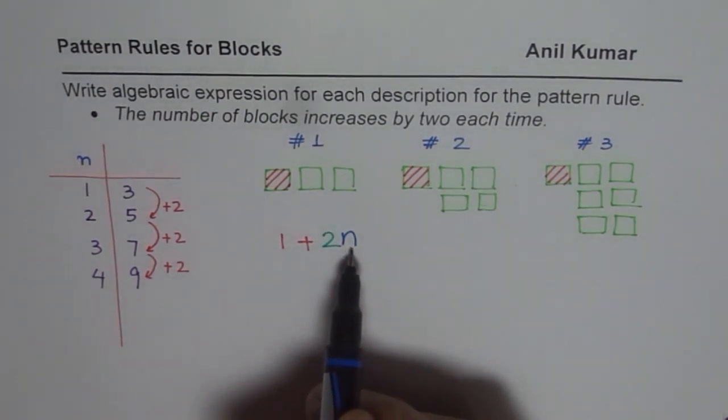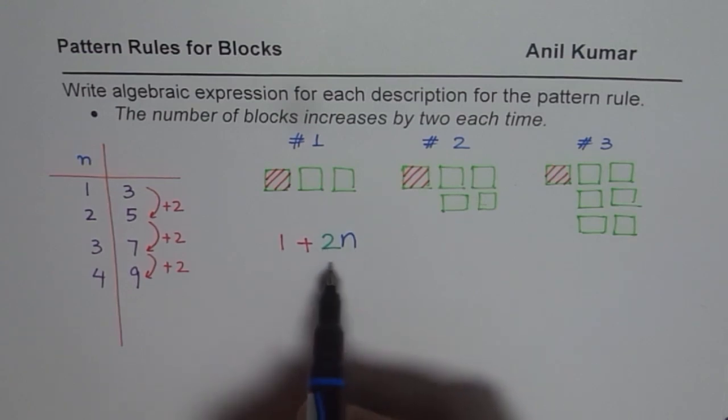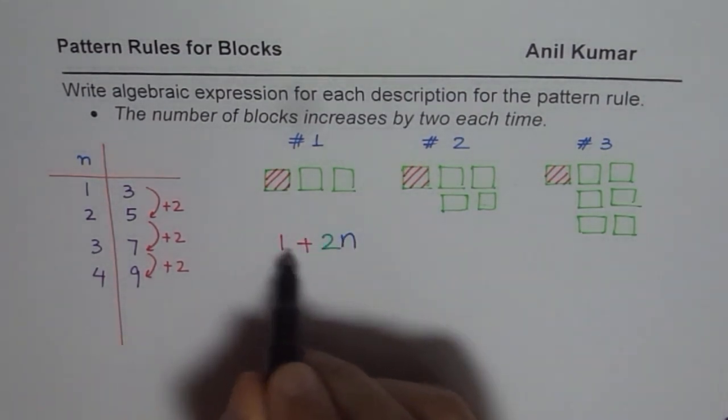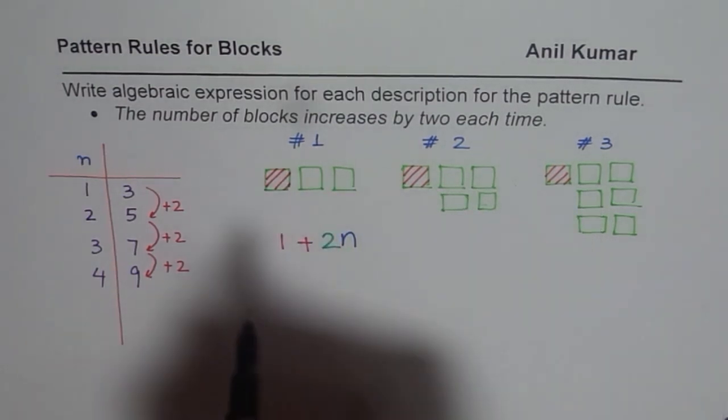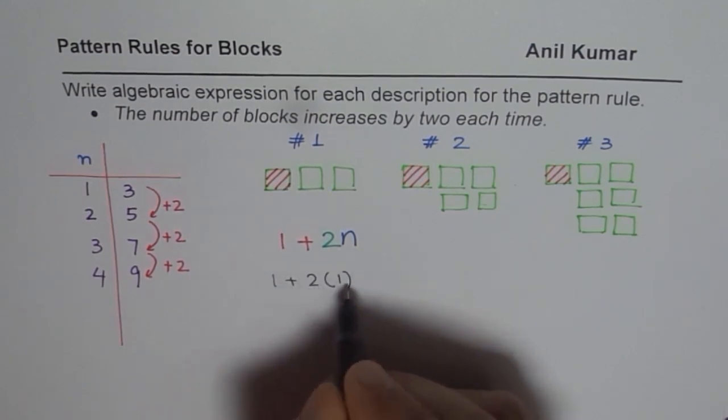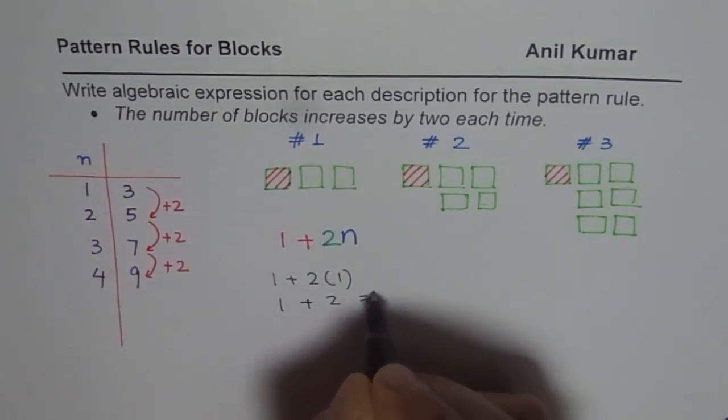So if I write n as one what do I get? I get one plus two times one which is three. Correct? Let us calculate for each and then see if this algebraic expression works for all. So we have one plus two times one. Two times one is two, so one plus two that is indeed three.